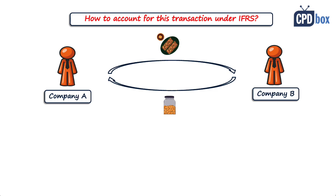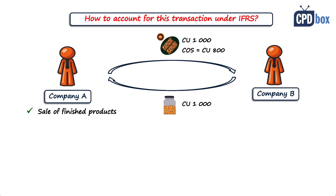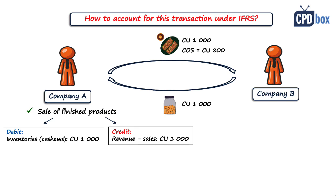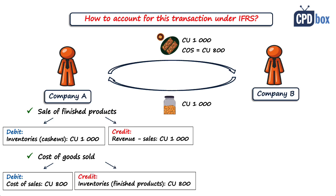Let me illustrate the accounting treatment. Let's say the food producer swaps cashews with a normal purchasing price of 1,000 currency units for own finished products with a normal sales price of 1,000 currency units, and the cost of the swapped finished products was 800 currency units. The food producer accounts for the sale of finished products as: debit inventories of cashews 1,000; credit sales of finished goods 1,000. We assume the cashews are delivered at the same time — otherwise you would debit receivables and later satisfy that receivable upon receipt of cashews. Also, the food producer removes the finished goods from inventories: debit cost of sales 800; credit inventories 800.